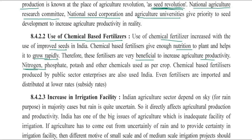These chemical fertilizers are produced by public sector enterprises. Like KRIBHCO — Krishak Bharti Cooperative Limited — which is a very big company in the government sector producing fertilizers in India. Also FCIL, Gujarat Narmada Fertilizer Corporation, GNFC, and FCIL — these companies produce fertilizers. We also import fertilizers and distribute them at lower rates through government subsidies so that farmers across India can use these fertilizers.